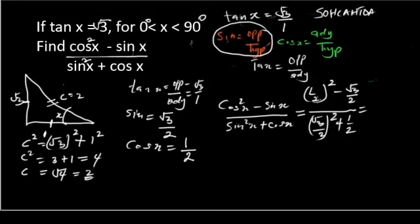Now, 1 over 2 all squared here, that's the same thing as 1 over 4. Let me come down here. That's equals to 1 over 4, minus root 3 over 2, all over, root 3 over 2 squared. Root 3 times root 3 is 3, over 2, plus half.